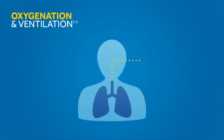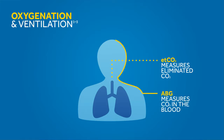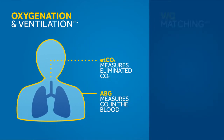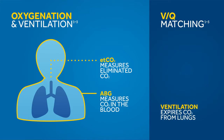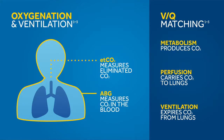Keep in mind that ETCO2 measures eliminated CO2, while an arterial blood gas (ABG) measures the actual CO2 in the blood. Ventilation-perfusion matching, known as VQ matching, is the relationship between ventilation — the airflow to the alveoli — and perfusion, which is blood flow to the pulmonary capillaries. A sudden change in ETCO2 may prompt you to measure PaCO2 via an arterial blood gas sample.